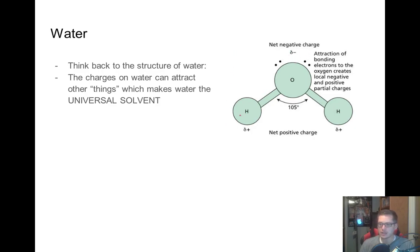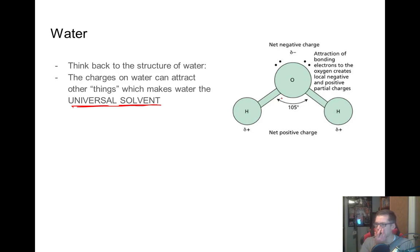Because of this, water is polar — it's kind of like a little magnet. And because it's a little magnet, it'll attract other things that are little magnets. Because of that, lots of things will be able to be dissolved by water, and so we call it the universal solvent. We'll talk more about exactly how that occurs in a future unit, but for now you just need to know that water can dissolve things because things want to stick to water since water is polar — it's all because of these net positive and negative charges.